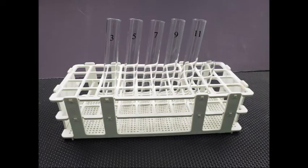Label five clean test tubes with the numbers 3, 5, 7, 9, and 11. This number represents the pH values of the chemical buffers that you will be using to control the pH at which your reaction occurs.